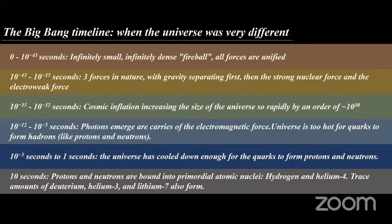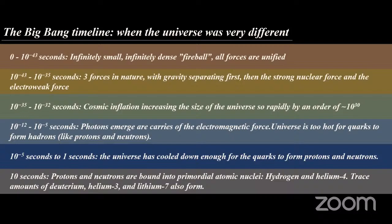After that there was a very rapid expansion of the universe called cosmic inflation — an expansion of an order of 10 to the 30. Then photons emerged because the electromagnetic force separated from the weak nuclear force. But the universe was still too hot to form protons and neutrons — there were fermions, but no protons and neutrons. Then at 10 to negative five to one second, the universe cooled down enough for quarks to form protons and neutrons. At 10 seconds, protons and neutrons bound into the nuclei of atoms.